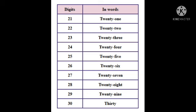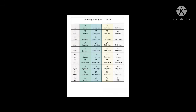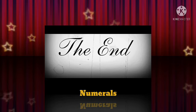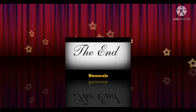Like this we will continue till twenty-nine. Then we will write thirty. We can write numerals if we know the number names. So kids, you have to learn number names with their numerals. We have completed number names and their numerals. Thank you.